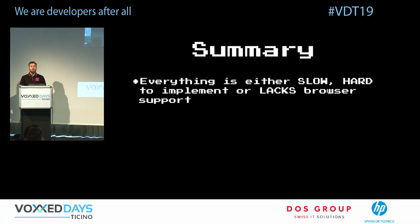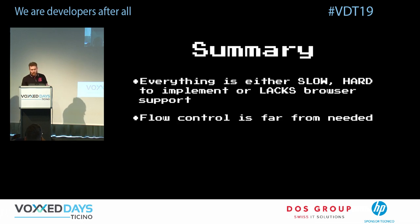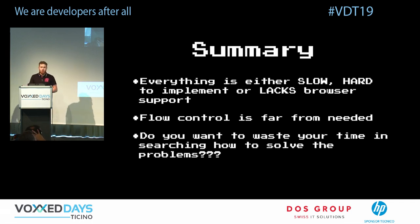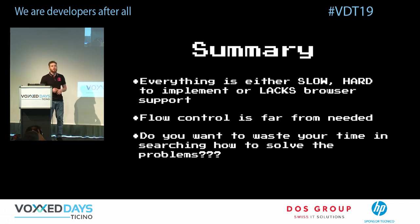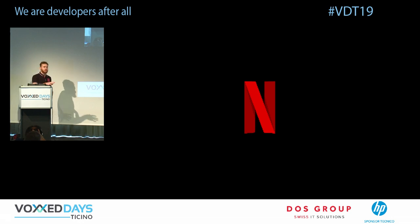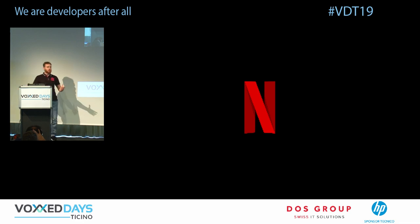A quick summary of what we've seen: everything is either slow, hard to implement, has poor browser support, or lacks proper back pressure. The same question was asked five years ago at Netflix. Netflix — a huge movie platform and developer shop — invented RxJava and started utilizing reactive extensions.